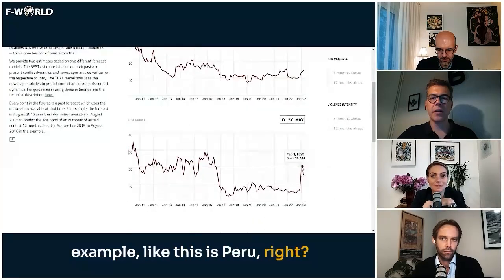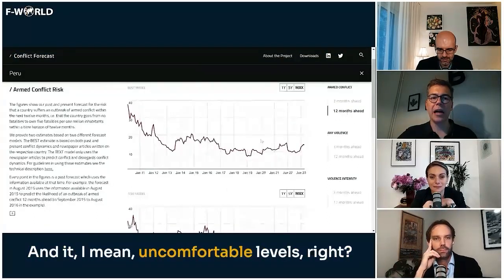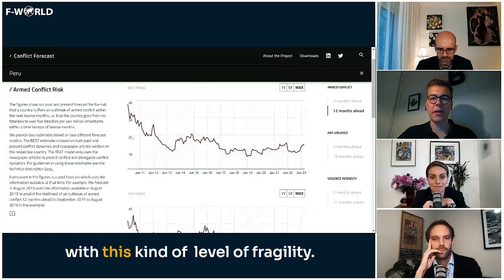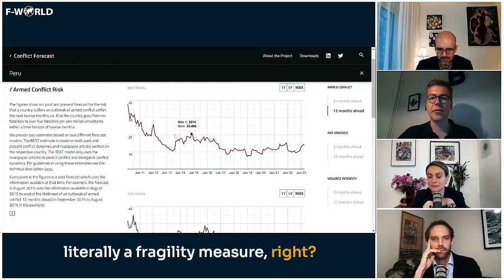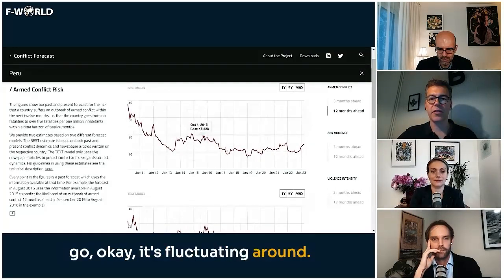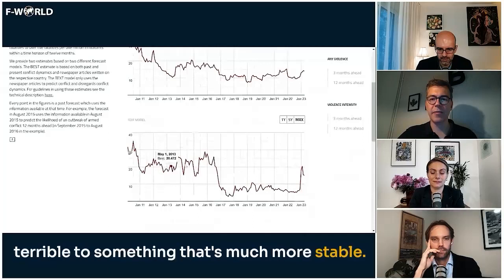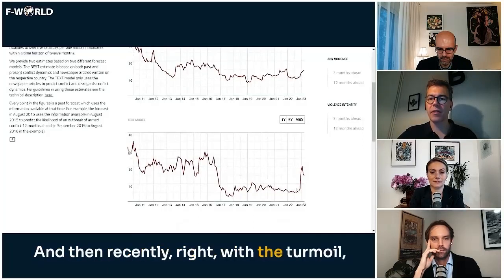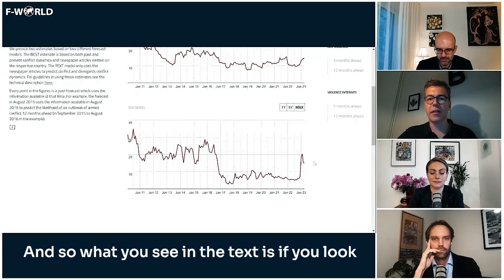Let's take Peru. You see the best model fluctuates back and forth at uncomfortable levels. Europeans would not be happy with this kind of fragility — this is literally a fragility measure. But it's fluctuating around a baseline. What you see in the text model is movement from something really terrible toward something much more stable, and then recently, with the turmoil and the auto-coup, it goes back up.